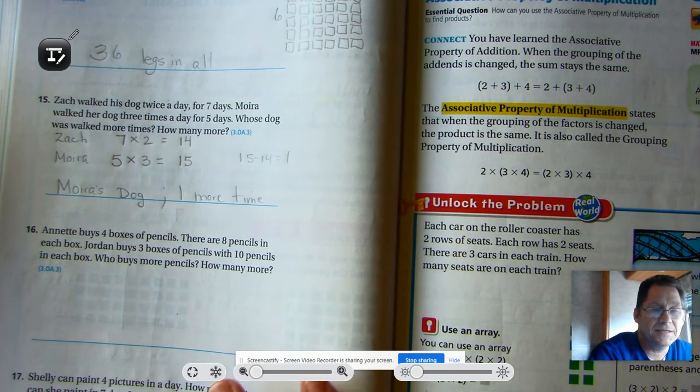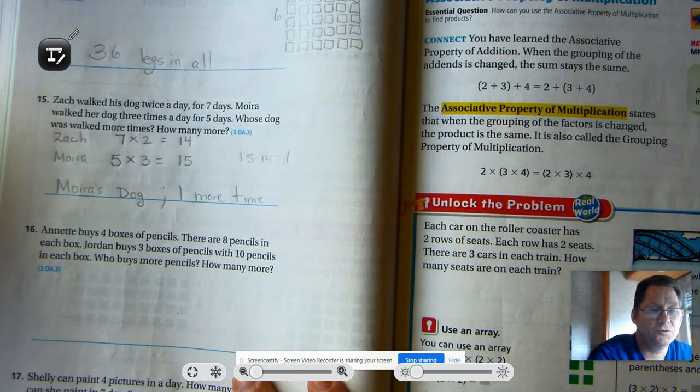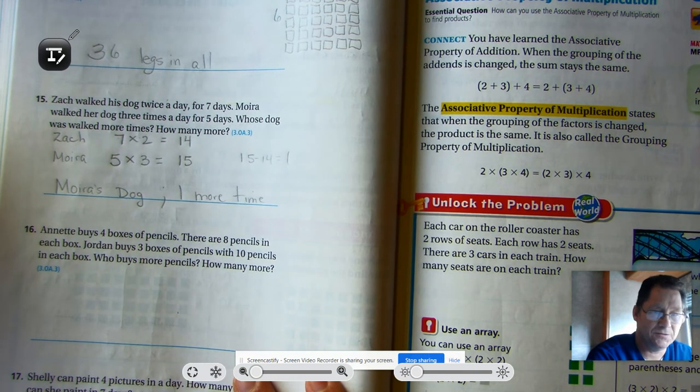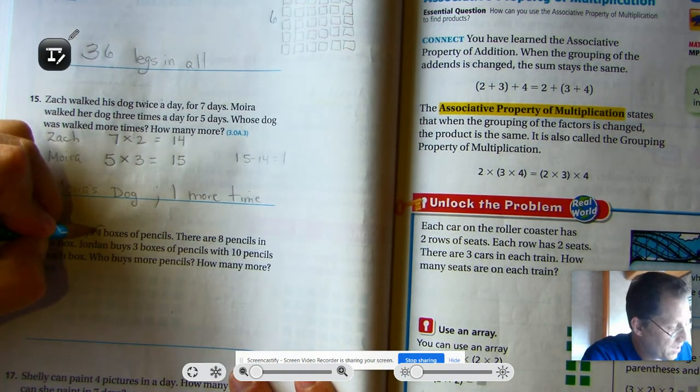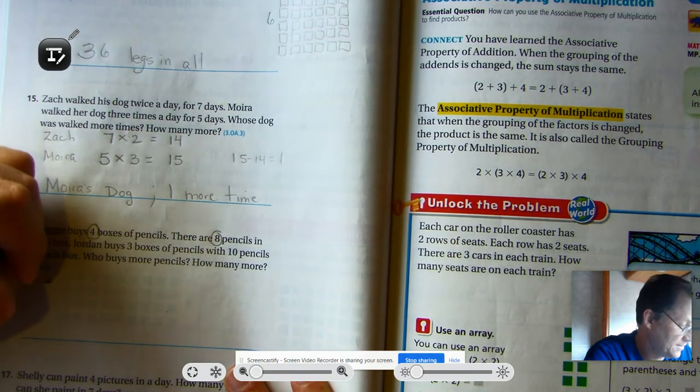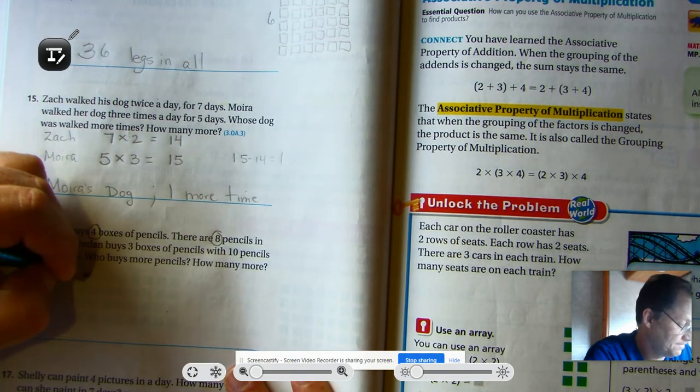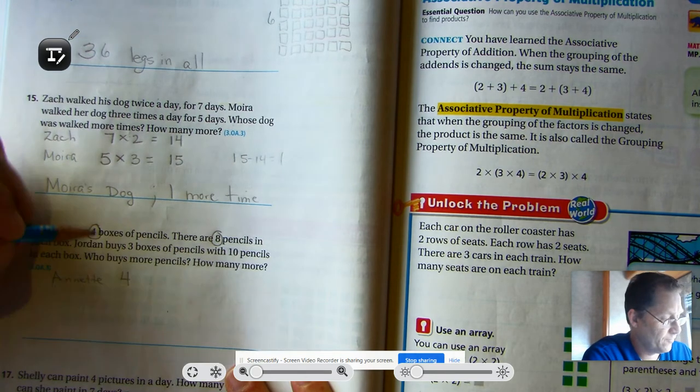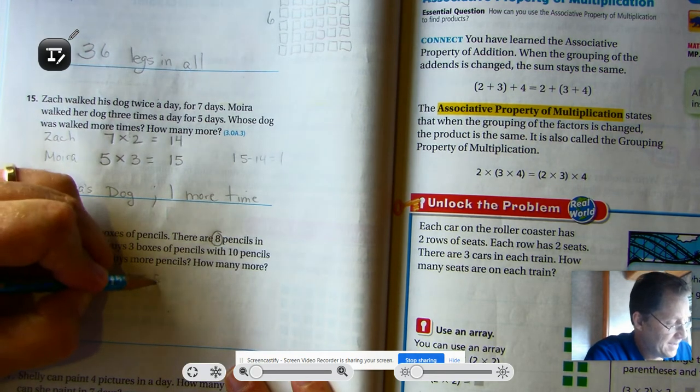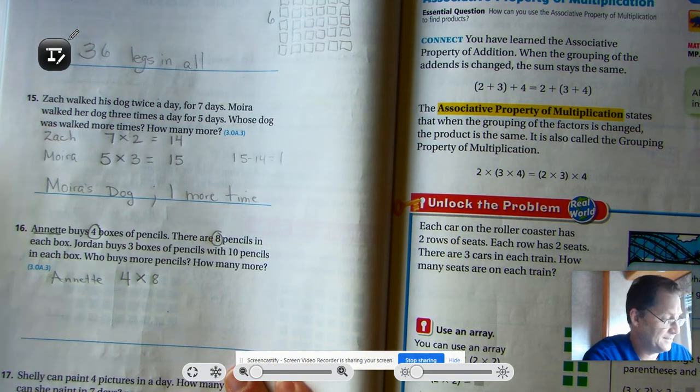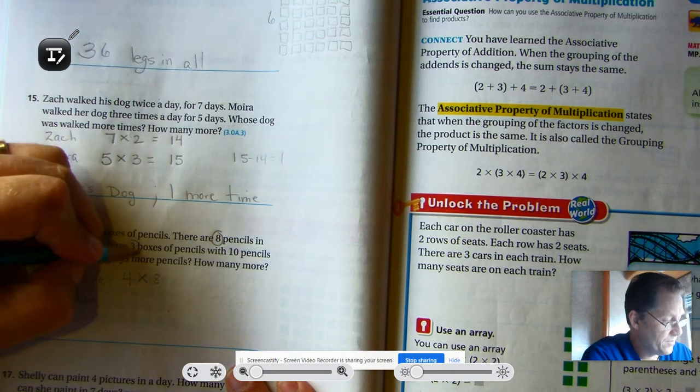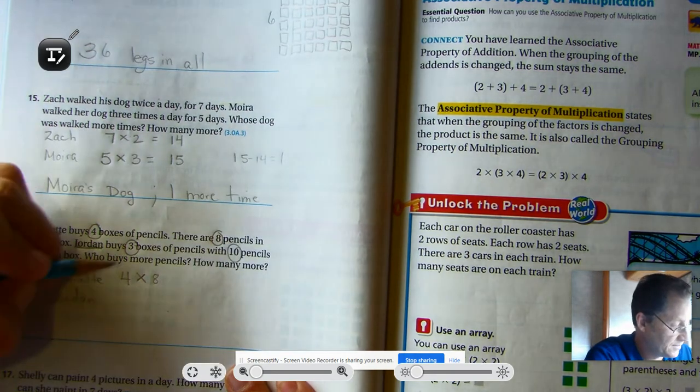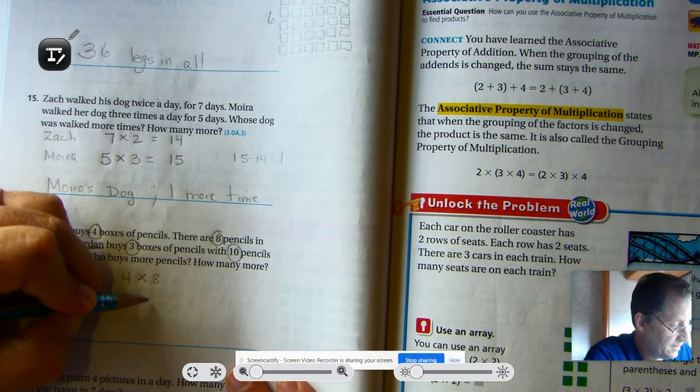Annette buys four boxes of pencils. There are eight pencils in each box. Jordan buys three boxes of pencils with ten pencils in each box. Who buys more pencils? How many more? So Annette has four boxes of pencils, eight pencils in each box. So that would be four sets or four groups. And eight pencils in each set. Jordan bought three boxes of pencils and there were ten pencils. So he has three groups of ten.